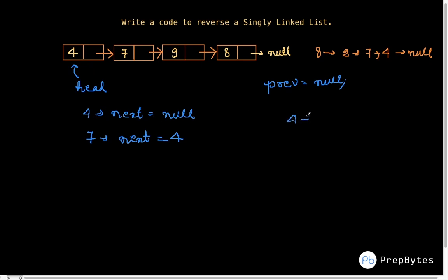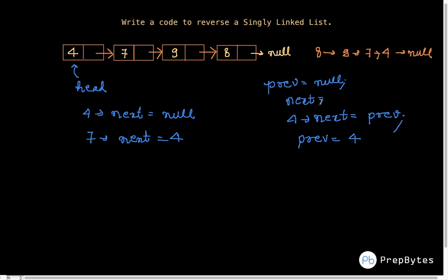What we do is set 4's next equal to prev. Now we need to make 7's next equal to 4, so we'll set prev equal to 4. But as soon as we do 4's next equal to prev, we will lose our access to node 7. So even before doing that, we must keep the next stored — we'll keep a variable `next` which stores 4's next, so we have something pointing to 7 and we're not losing it.